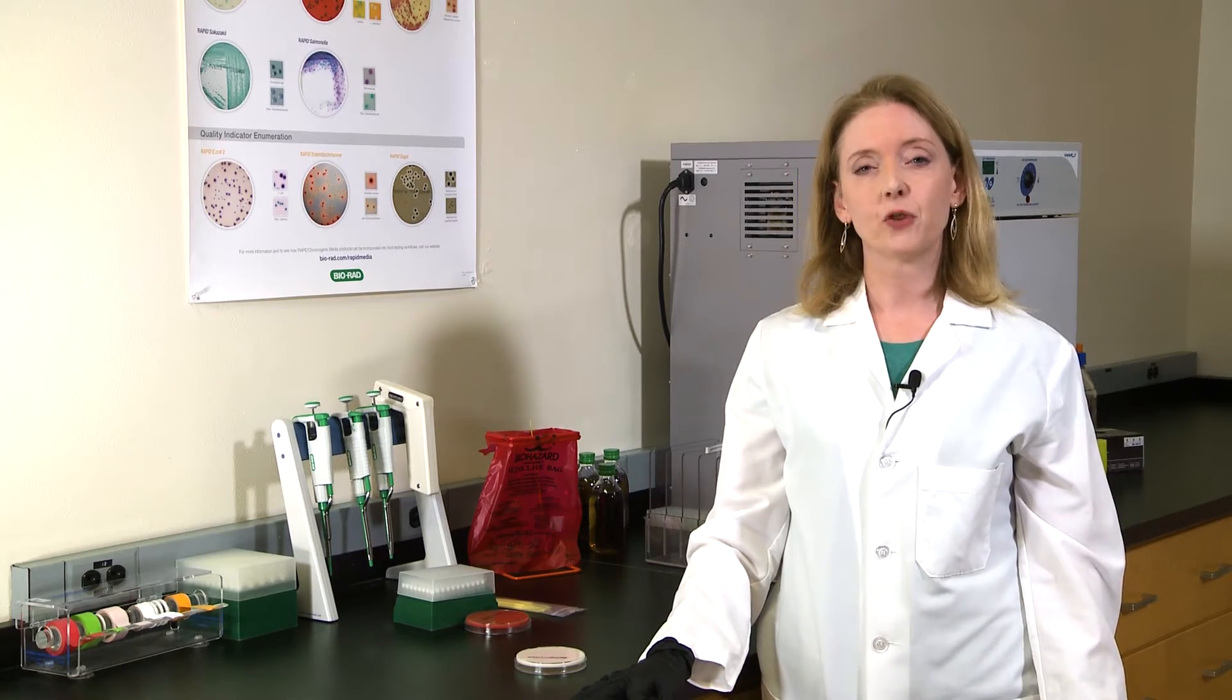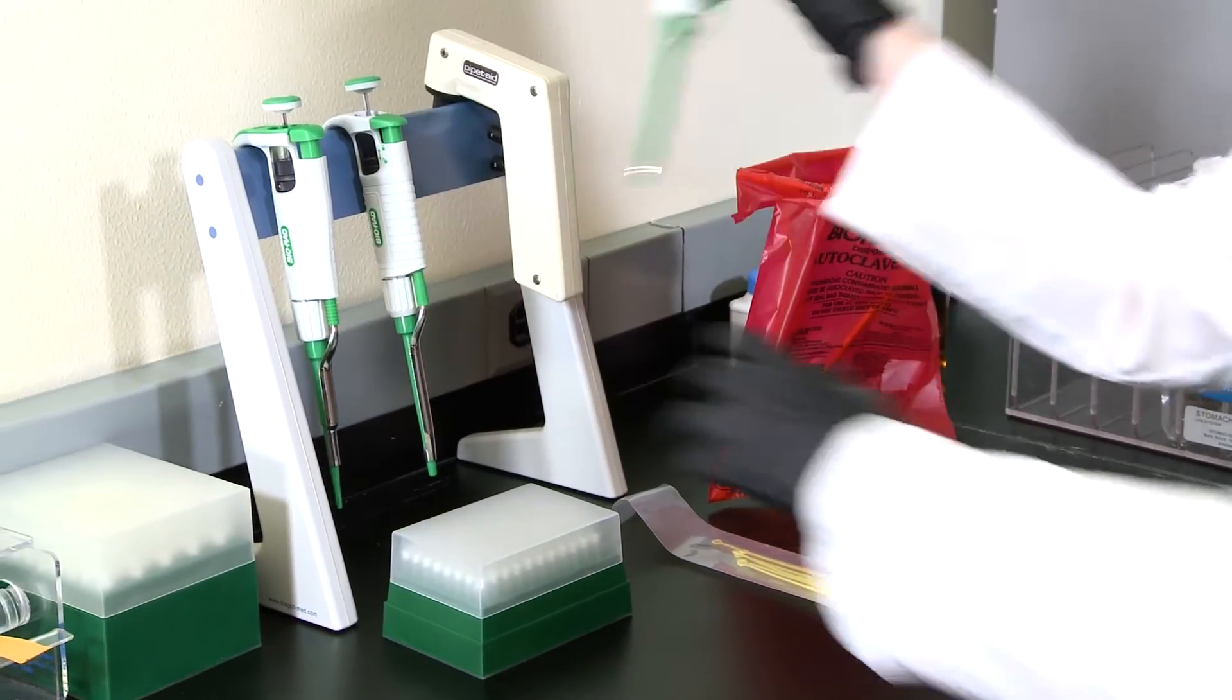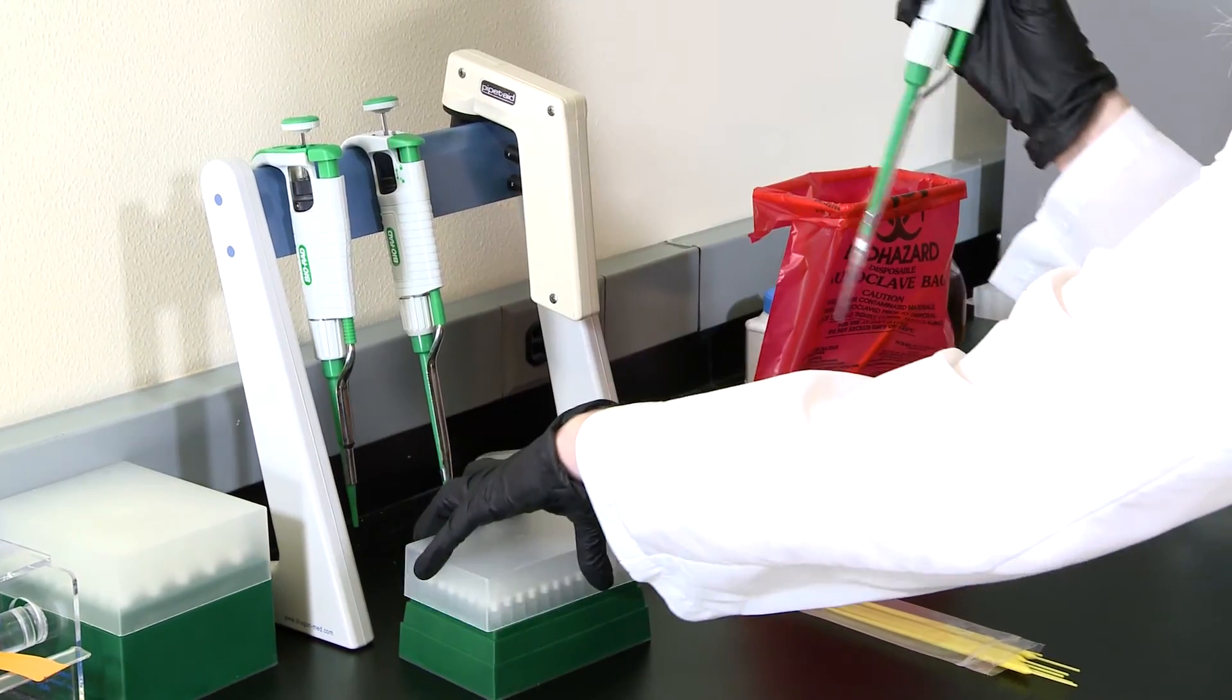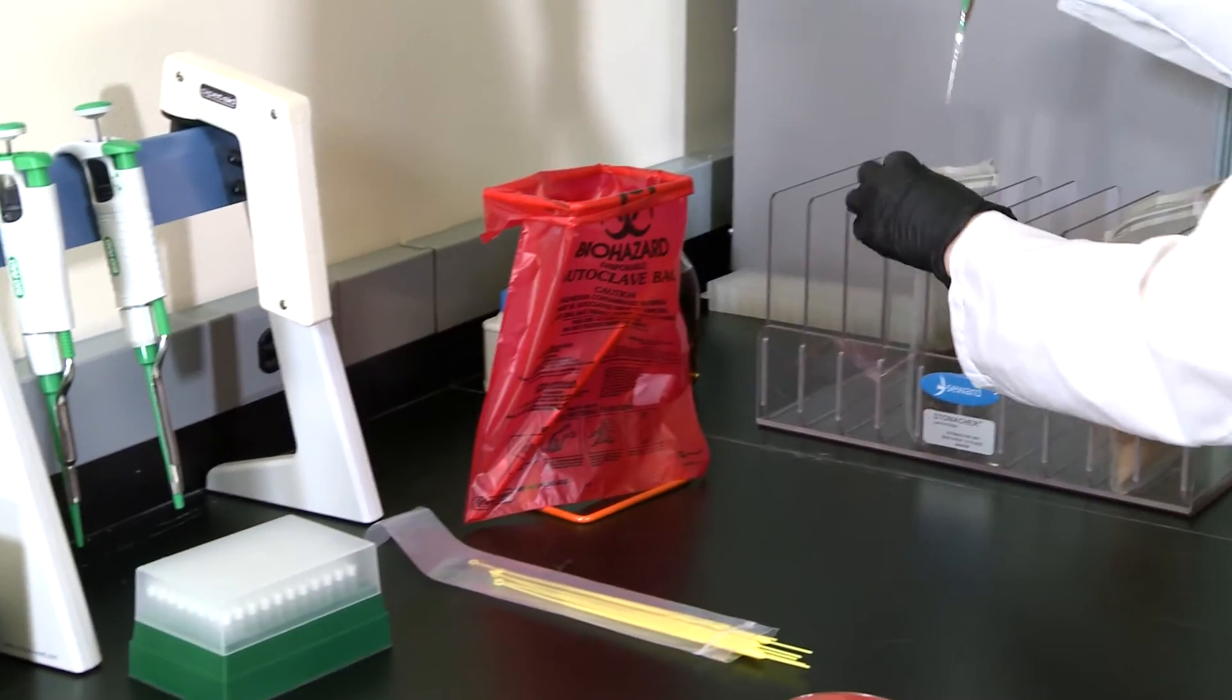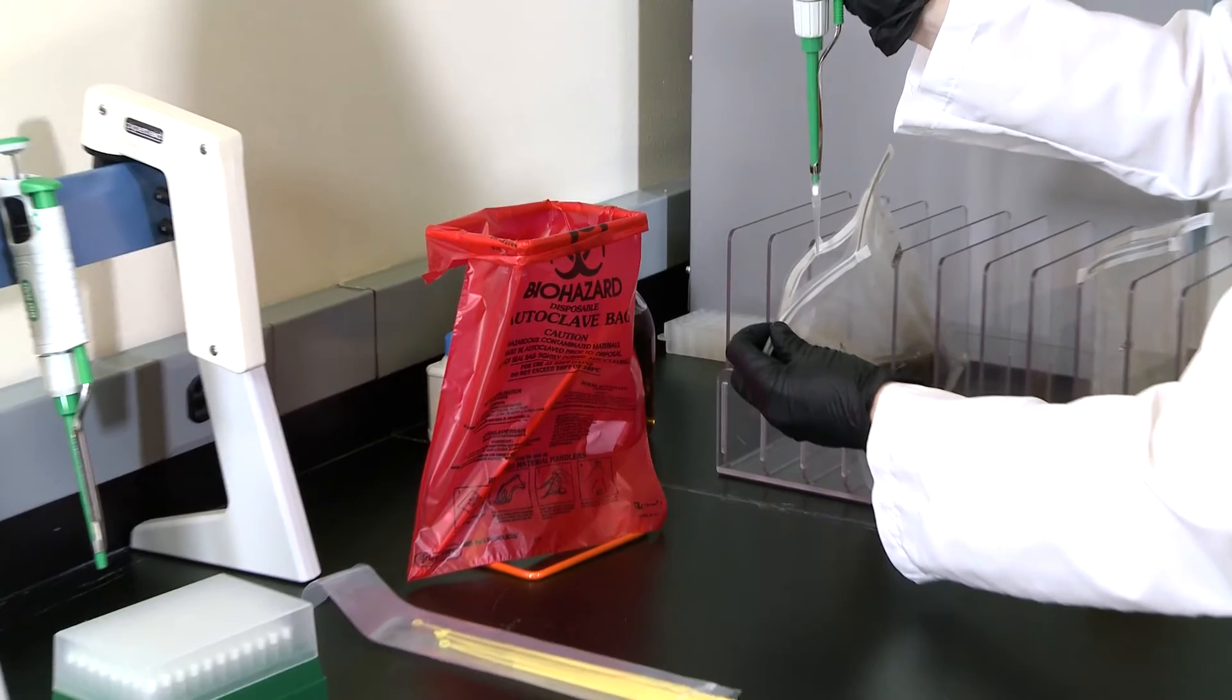Now we will move on to the protocol for listeria agars. Today we will be using rapid L mono as an example but the streaking protocol is the same for rapid listeria species and AL agar Ottavani and Agosti formula. We've already enriched our sample and we will take 100 microliters using a pipette and place it on the outside edge of the plate.